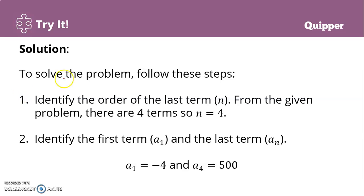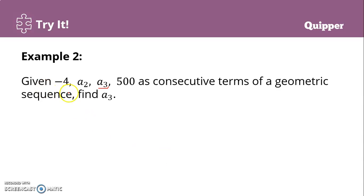We follow these steps: first, identify the order of the last term. From the given problem there are four terms, so n equals 4. Then identify the first term and the last term: the first term is negative 4, the last term is 500, and n is 4 because there are four terms — one, two, three, and four.